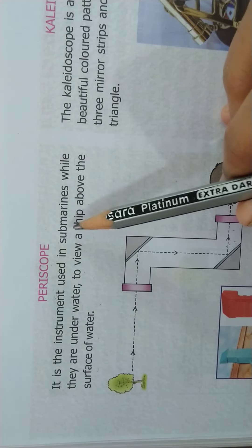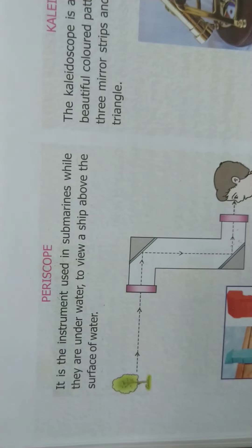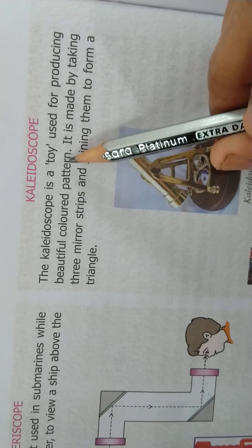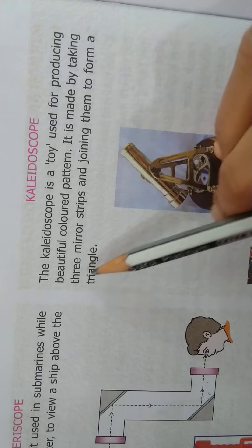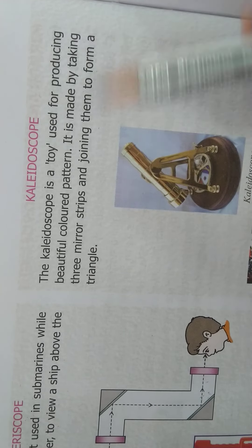hum water ke surface me jo bhi kuch ho raha hai, jo bhi us me images hai, woh hum is periscope se dekhte hai. Kaleidoscope is a toy used for producing beautiful colored pattern. It is made by taking three mirror strips and joining them to form a triangle.